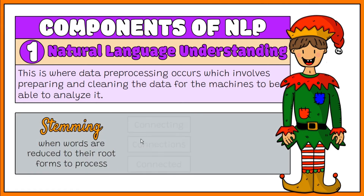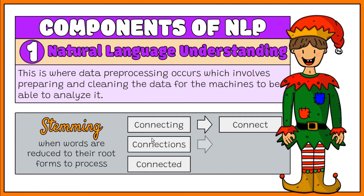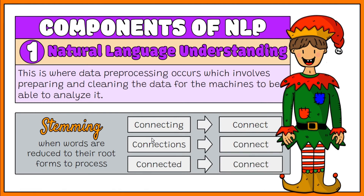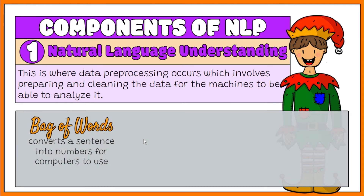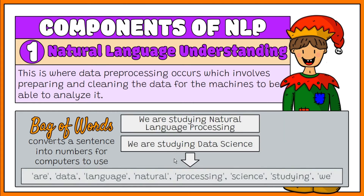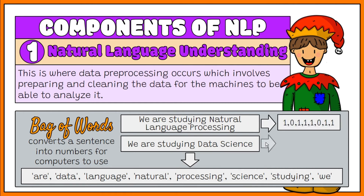Stemming is when words are reduced to their root forms to process. Bag of Words is when a text document is converted into numbers that can be used by a computer program. This is important since the machine learning model will not directly understand text data. Bag of Words is used to extract feature sets from text. It collects all the unique words in a text document, then determines whether a word appears in a text and how many times it occurs. It doesn't care about order or context.